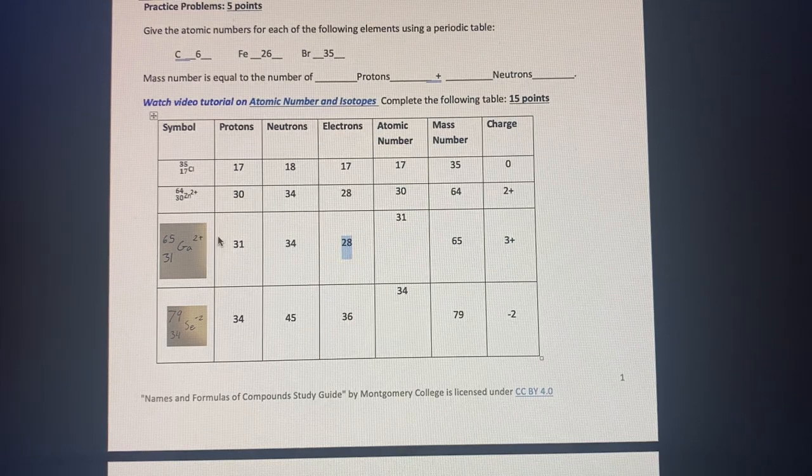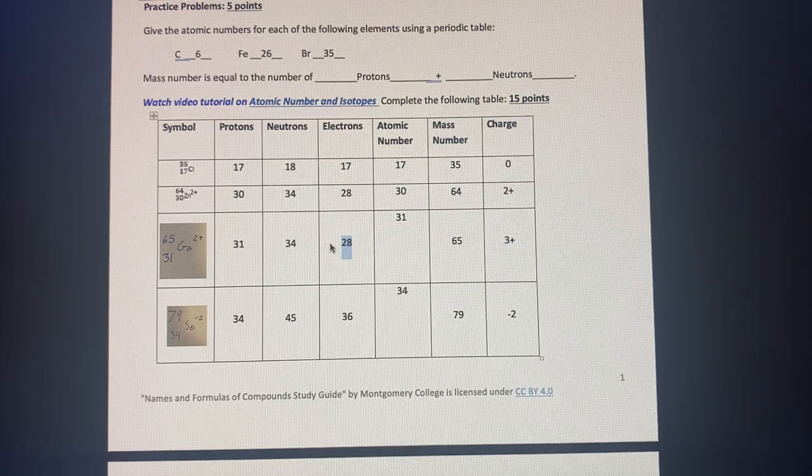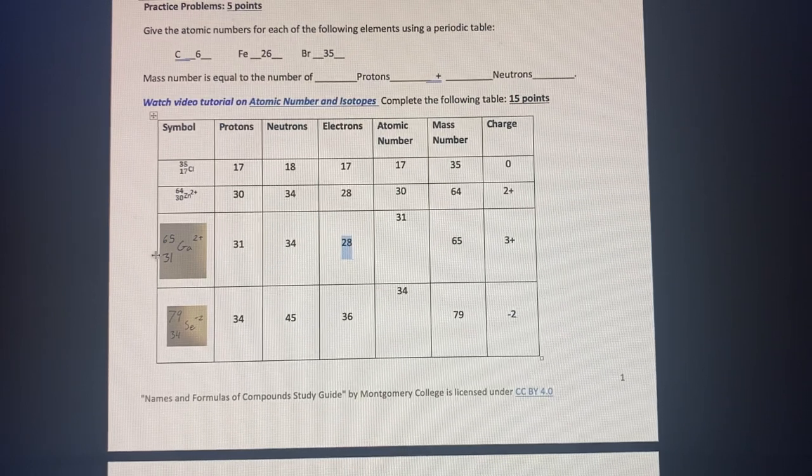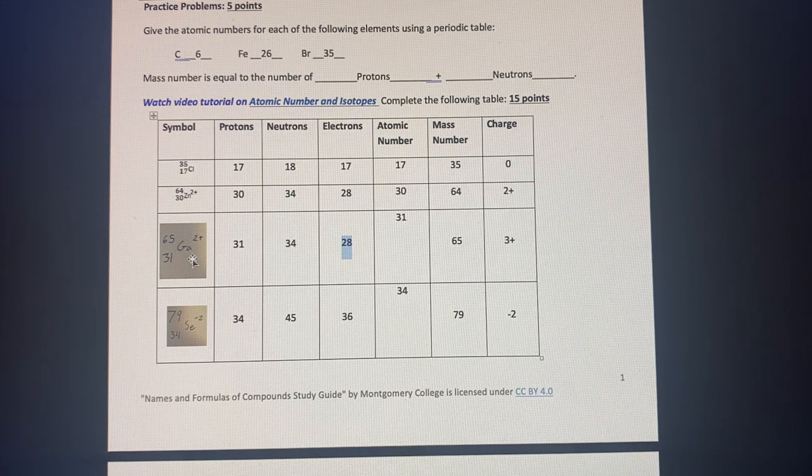So we know it's a charge of three plus. So the electrons will be 28 to 31, and it will be 65, 31, and then Ga3+.